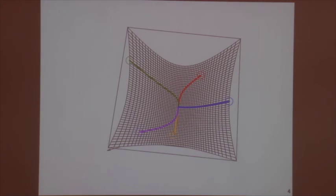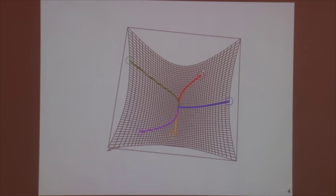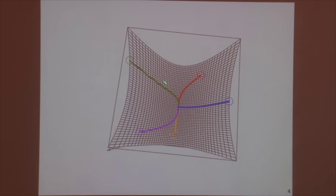Here is an example with a 2D strictly convex function. The global minimum is unique, and the colored curves are trajectories of gradient descent from different starting points. For instance, the red curve starts at x_0 and follows the steepest descent direction until reaching the global minimum. As long as the function is convex, no matter what the starting point is, you'll eventually locate the minimum.